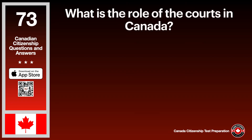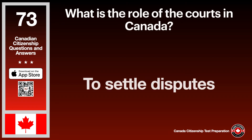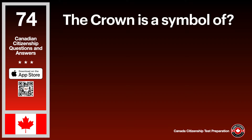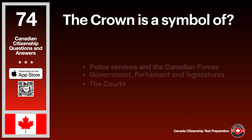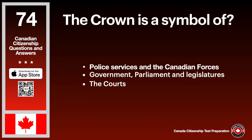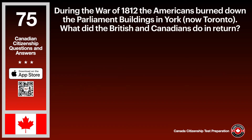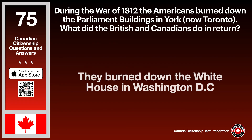What is the role of the courts in Canada? The answer is to settle disputes. The Crown is a symbol of police services and the Canadian forces, government, parliament and legislatures, and the courts. During the War of 1812, the Americans burned down the parliament buildings in York, now Toronto. What did the British and Canadians do in return? The answer is they burned down the White House in Washington, D.C.